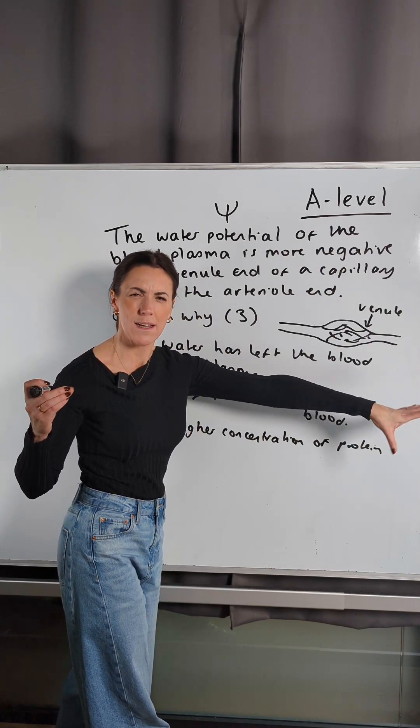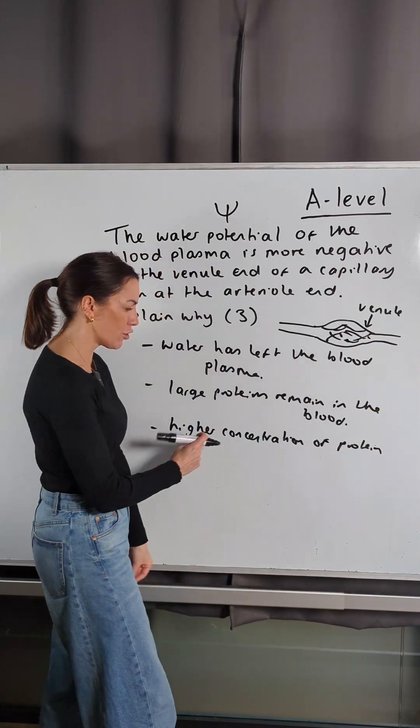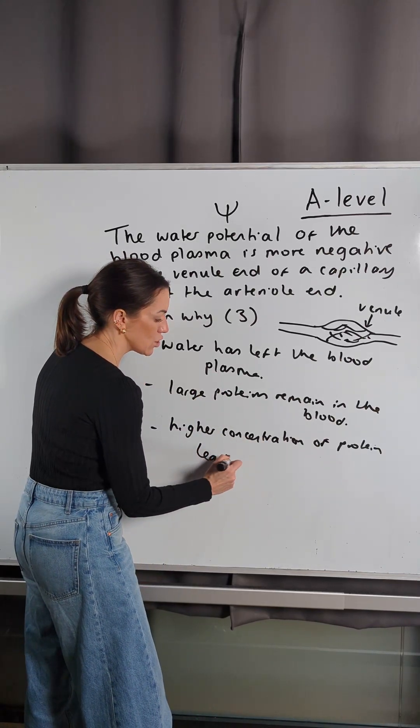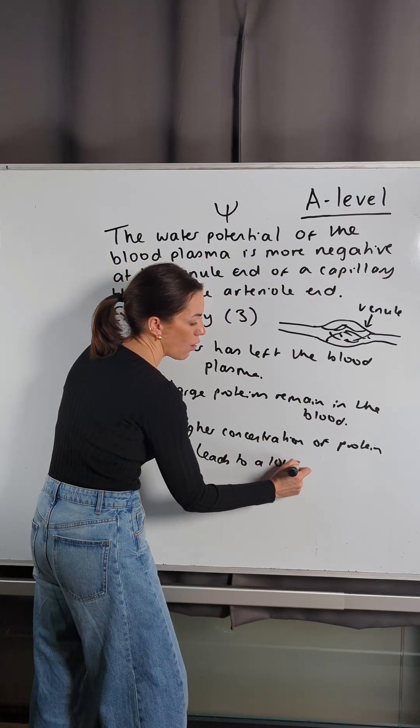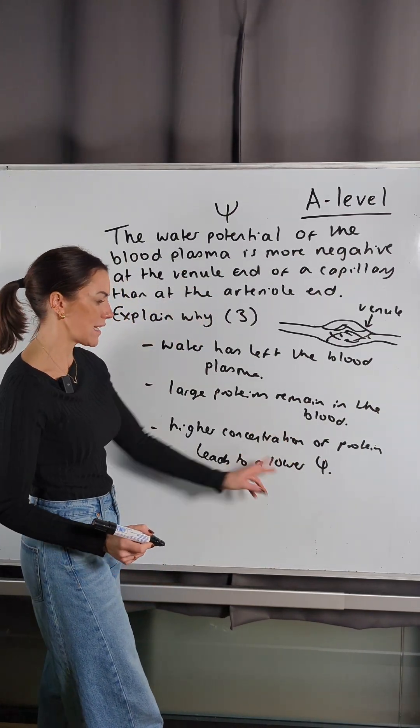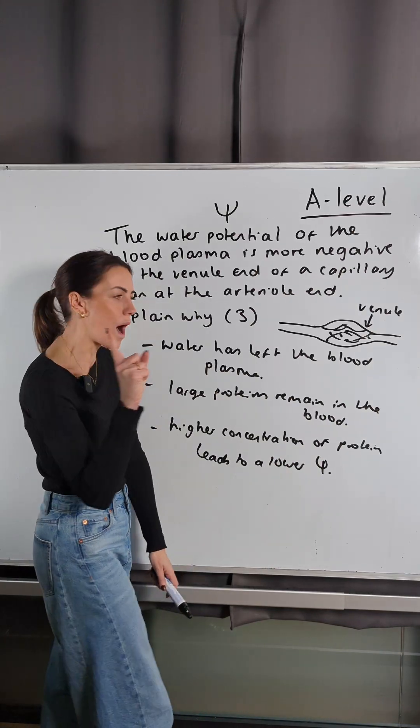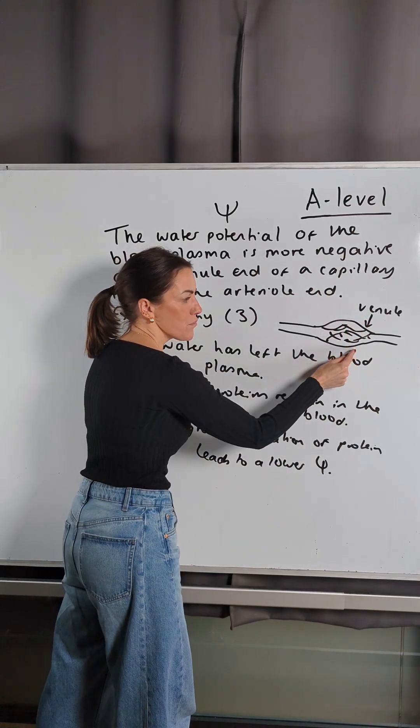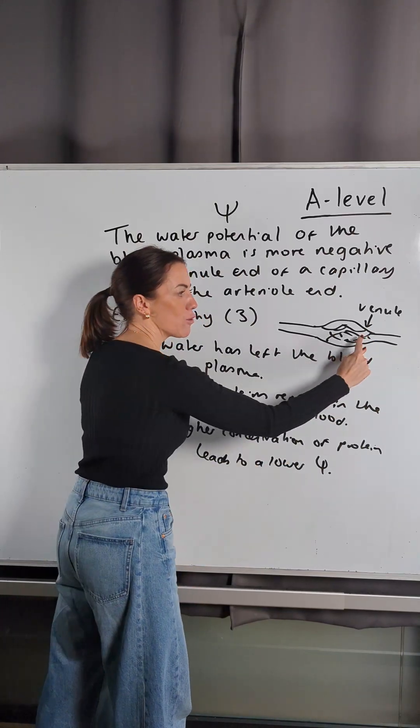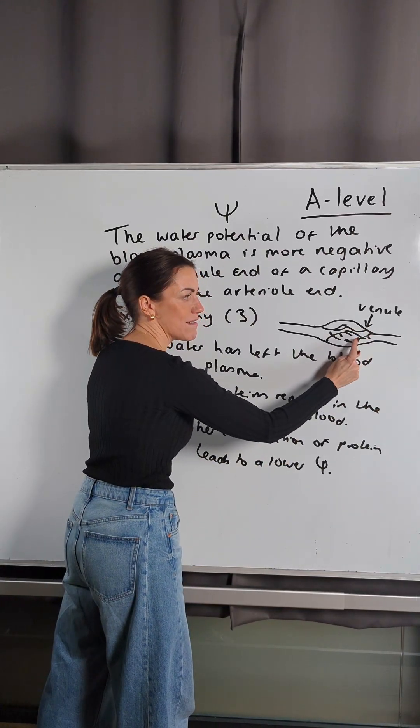So what we've got is a higher concentration of protein because you've still got the same amount of protein but in a lower volume of water. So overall, the concentration of proteins is now higher, which leads to a lower water potential. Higher concentration of protein leads to lower water potential.